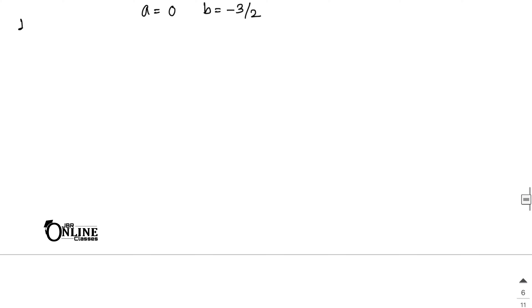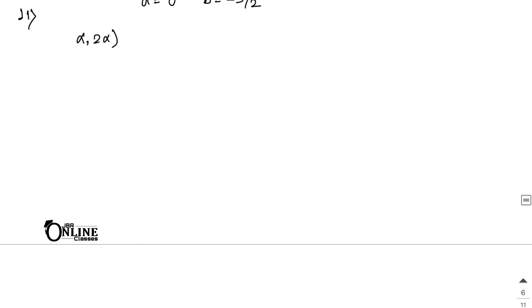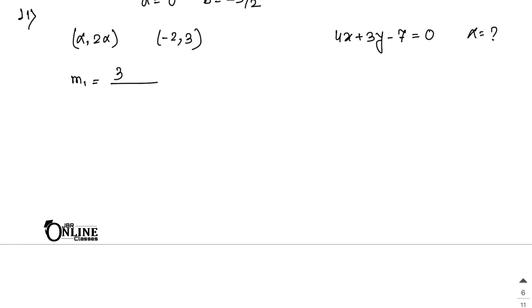Sum number 11: a line passes through points (alpha, 2alpha) and (minus 2, 3) and is perpendicular to 4x plus 3y minus 7 equal to 0. Find alpha. Since the lines are perpendicular, m1 × m2 equals minus 1. The slope m1 from the two points is (3 minus 2alpha)/(minus 2 minus alpha). The slope m2 of the given line is minus 4/3.